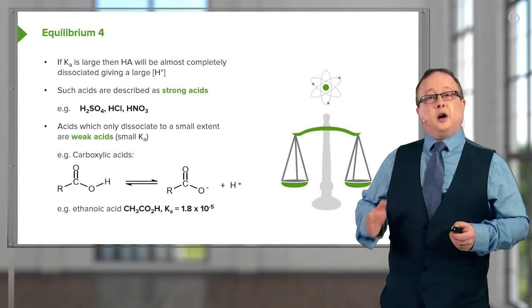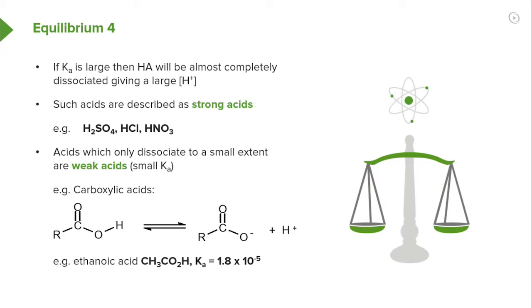Acids, which only dissociate to a small extent, are called weak acids. And these possess a small acidity constant, or KA. A good example of these are the carboxylic acids. We'll be discussing carboxylic acids and the influences on their structure in a bit more detail in Module 3. But for the moment, hopefully you can appreciate that where we have an organic acid, such as the carboxylic acid shown in this particular case,